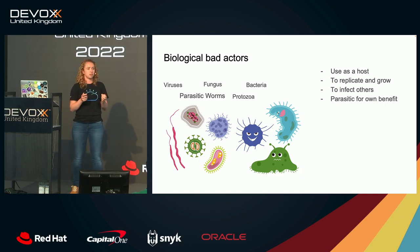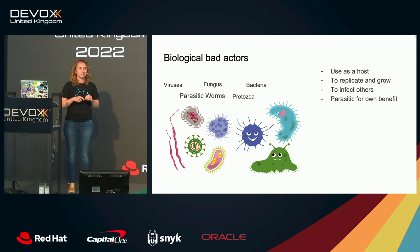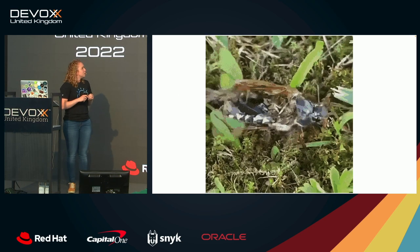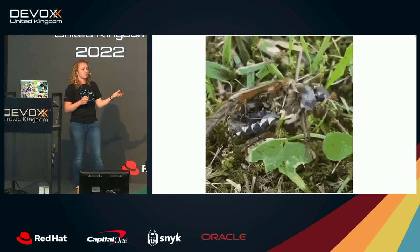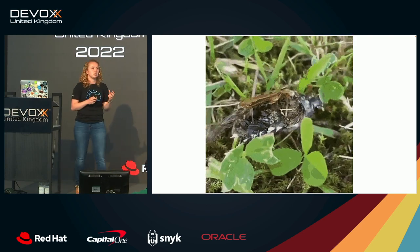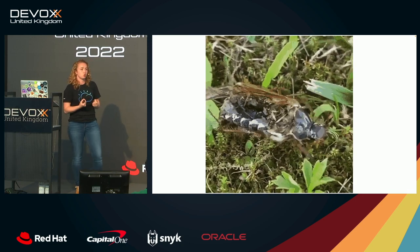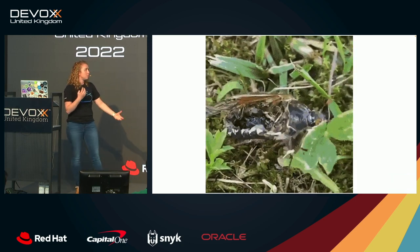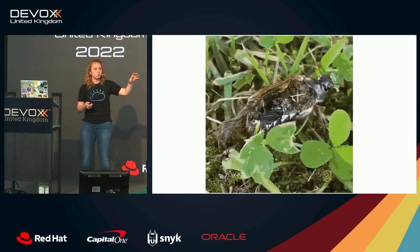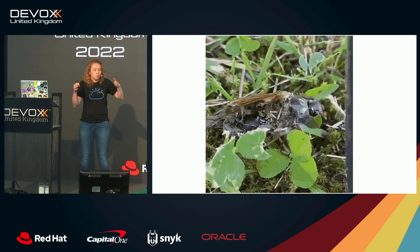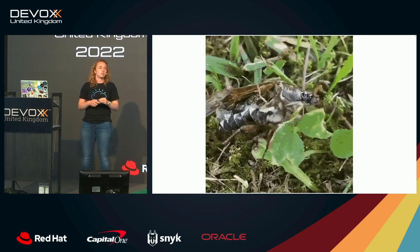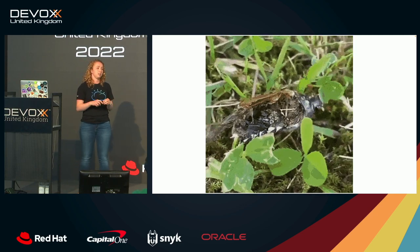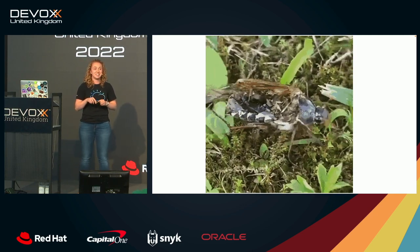Or they might use you parasitically for their own benefit. If anyone is queasy, look away now. This is a beetle with no insides — how is it walking? There's a fungus that's infected its brain and essentially controls its movement neurologically, directing the beetle to exactly where the fungus wants to be. Then the beetle dies, and the fungus uses its body as a host to spread to other beetles. So for anyone who doubted zombies exist — they definitely do.